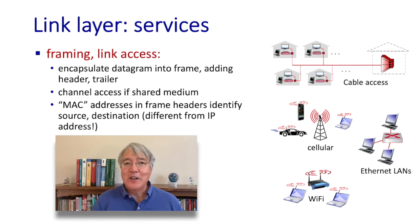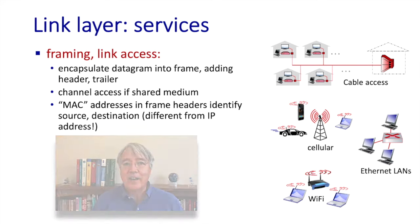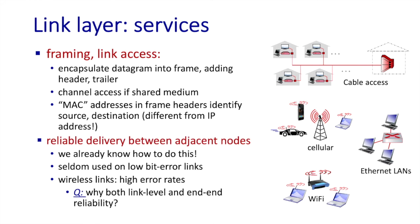At the link layer, there's also a new addressing scheme: many link layers implement a 48-bit MAC layer addressing scheme, distinct from the 32-bit or 128-bit IP addressing scheme studied earlier. MAC addresses are only used in the context of an individual link, not network-wide like IP addresses. Another service is reliable delivery of frames between adjacent nodes — we already know how to do this using ACKs, NACKs, error detection bits, timeout, and retransmit. These techniques are seldom used on low-bit-error links, but they are used in wireless links because wireless links are subject to noise, interference, and high bit error rates.